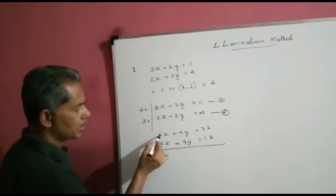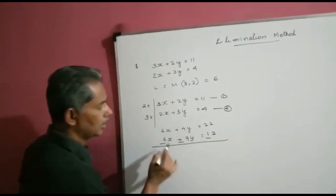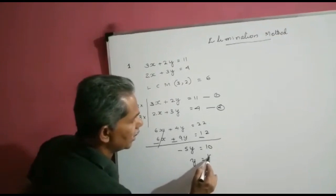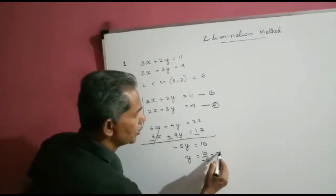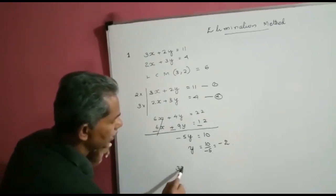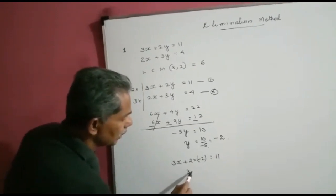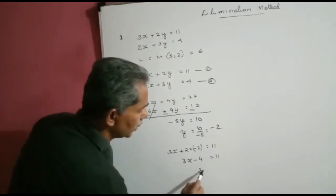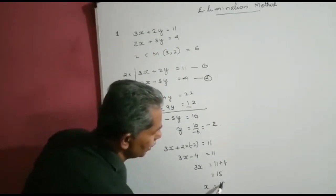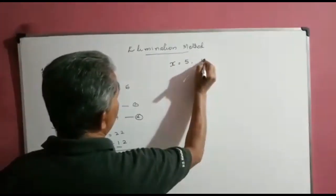Now eliminate. Since the signs of the coefficients of x are the same, we eliminate by subtracting — changing the sign gives minus 5y is equal to 10, which means y is equal to 10 divided by minus 5, that is minus 2. Substituting y equals minus 2 into the first equation: 3x plus 2 times minus 2 equals 11, so 3x minus 4 equals 11, giving 3x equals 15, therefore x equals 5.